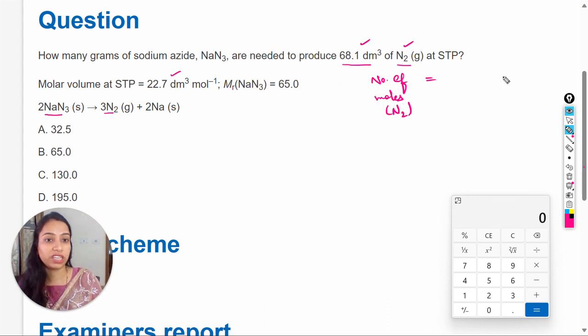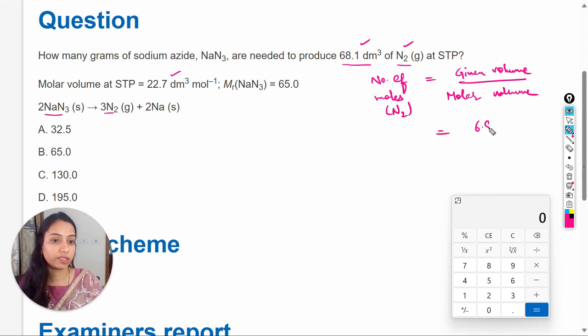given volume divided by molar volume. So, the given volume is 68.1 dm³ divided by 22.7 dm³ per mole. This gives us 3.